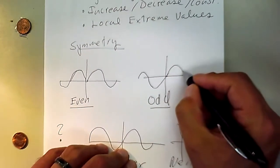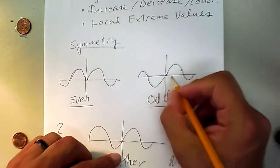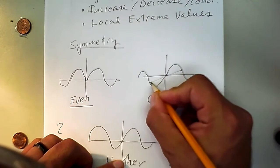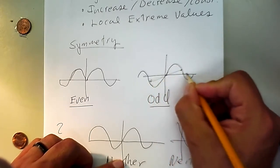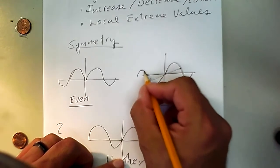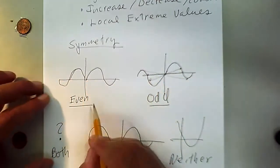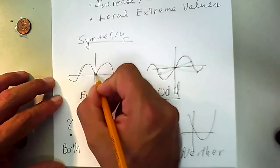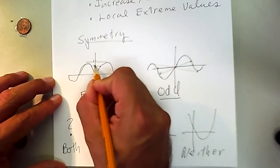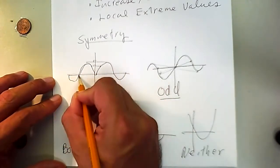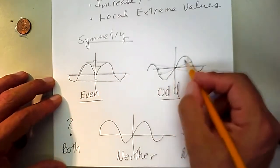Odd means that if you take a point and draw a straight line through the origin, there is going to be exactly one point that is the same distance across the origin — this point corresponds to this one. For even functions, points are opposite through the y-axis at a 90-degree angle. There are many kinds of symmetry; for odd it's just through the origin.